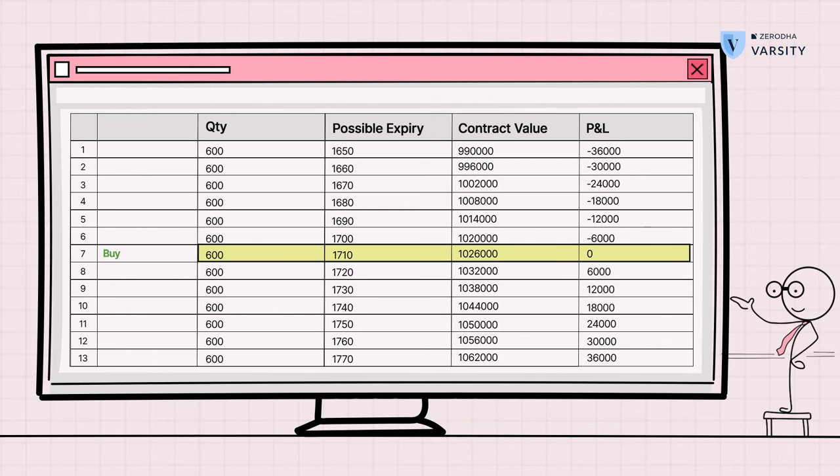And if markets expire at this price, it's a breakeven. There's no profit, there's no loss because the market is at cost. Now, as we move upwards from 1720 to 1730 and so on and so forth, the profit keeps increasing linearly. So a 10 rupees increase in price gives you a 6000 rupee profit and a 10 rupees decrease in price gives you a 6000 rupee loss.